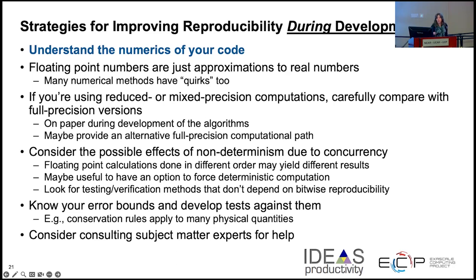You may have to have an option that forces deterministic computation, with testing and verification methods to confirm results are correct. One run may not suffice because concurrency can change the order every time. Know your error bounds and develop tests against them. Consider consulting your subject matter domain experts — don't always assume you know exactly what's going on in the domain.